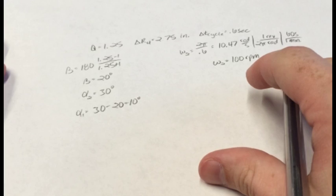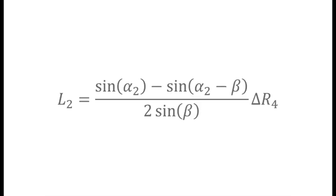Now that we have the angles, we can find the link lengths. Link 2 can be found using this formula: L2 equals sine of alpha 2 minus sine of alpha 2 minus beta over 2 sine of beta times delta R4.